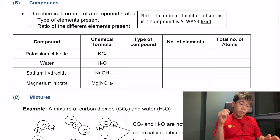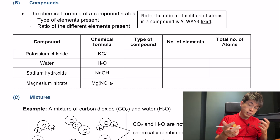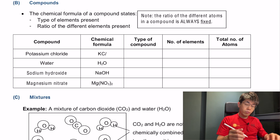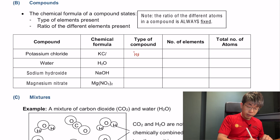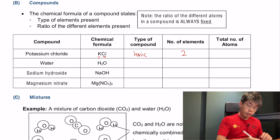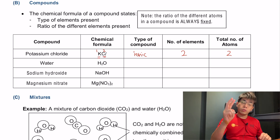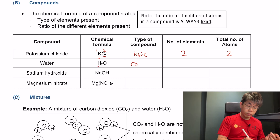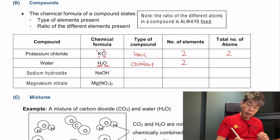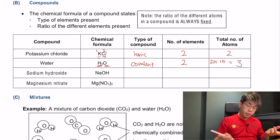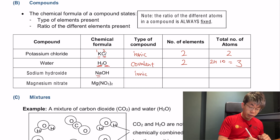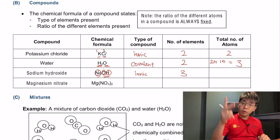In compounds, the ratio of atoms must always be fixed. Potassium chloride (KCl) is ionic — a metal and non-metal. It has two elements (potassium and chlorine) and two atoms total. Water (H2O) is covalent — non-metal and non-metal — with two elements (hydrogen and oxygen) and three atoms total: two hydrogen and one oxygen. Sodium hydroxide (NaOH) is ionic with three elements (sodium, oxygen, hydrogen) and three atoms total.